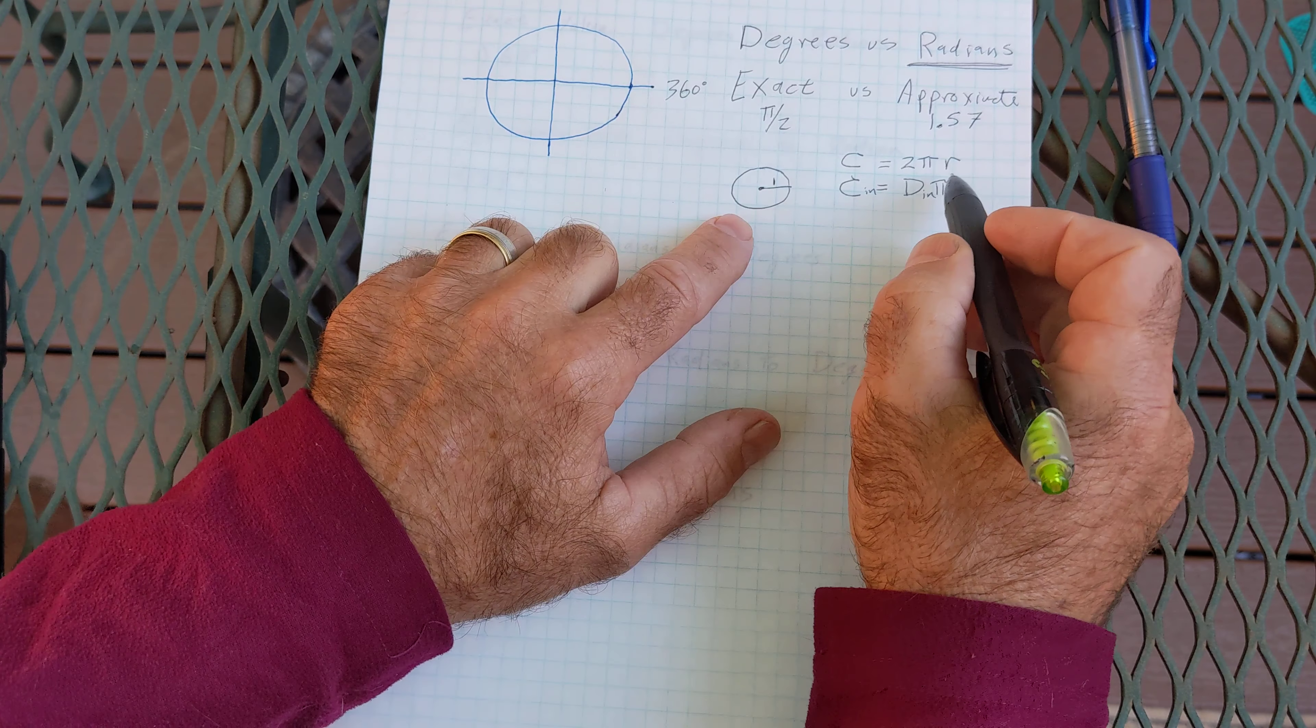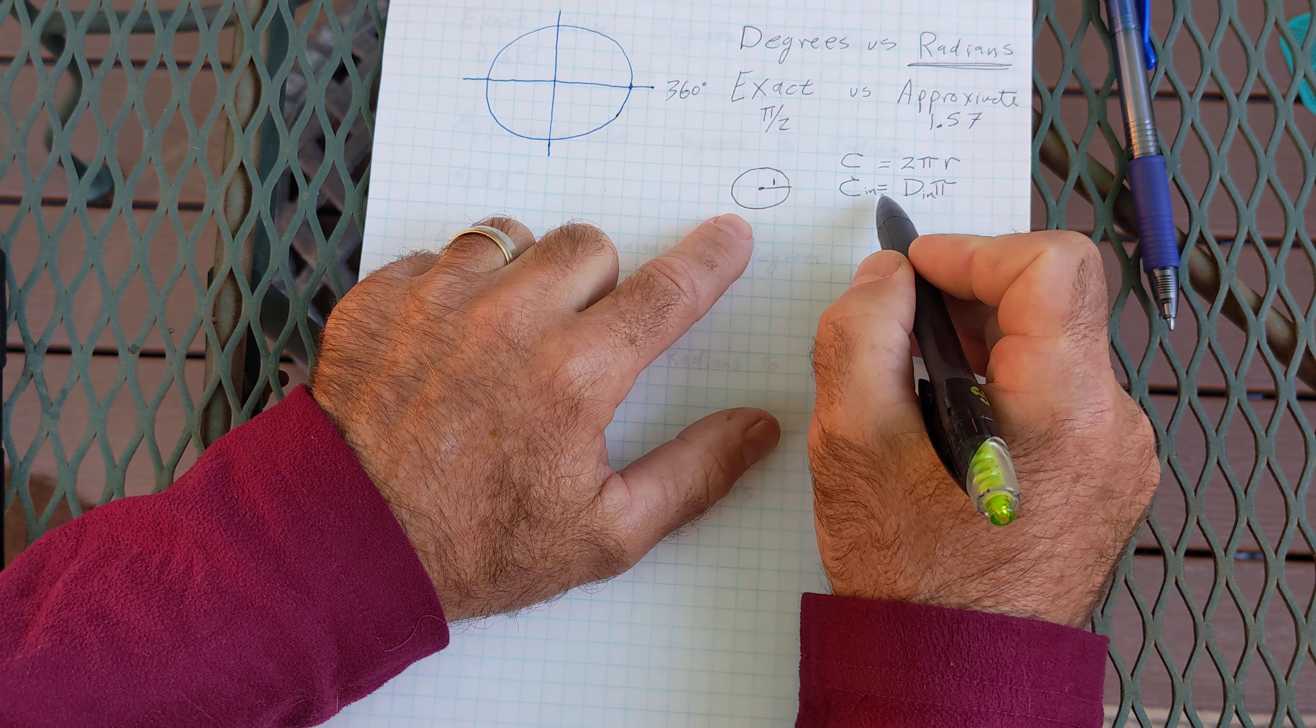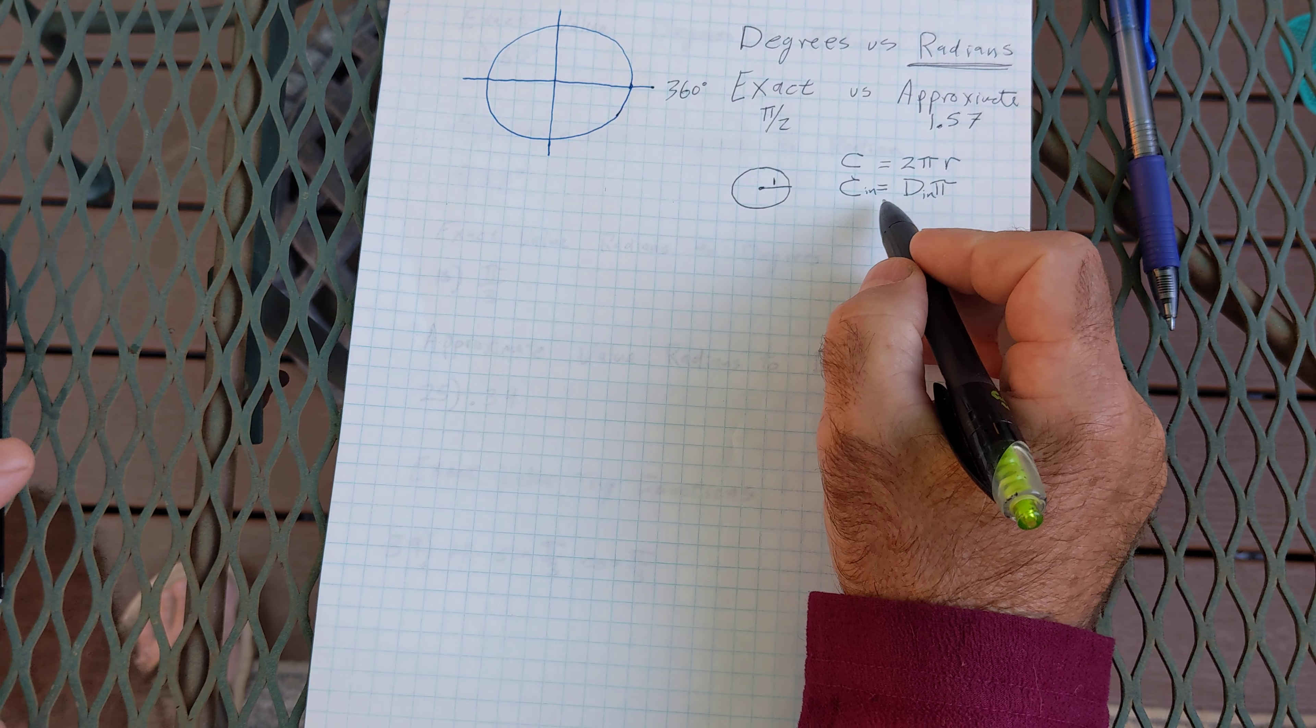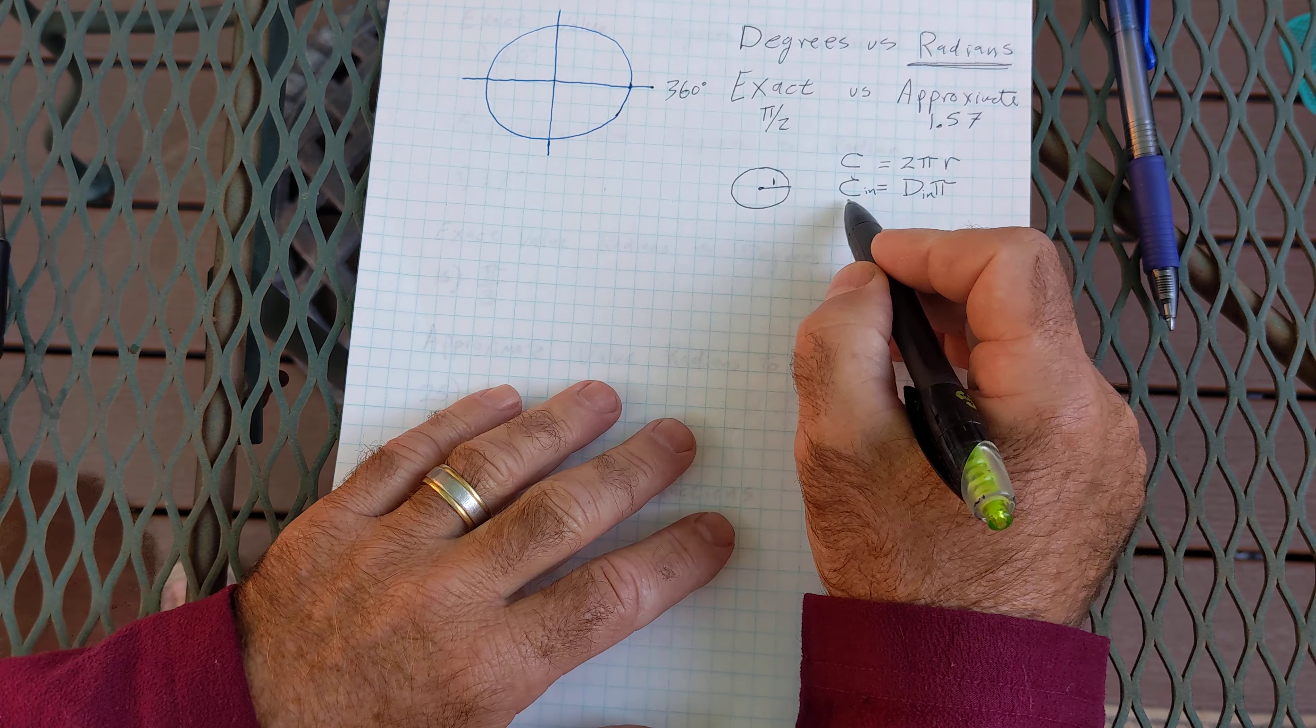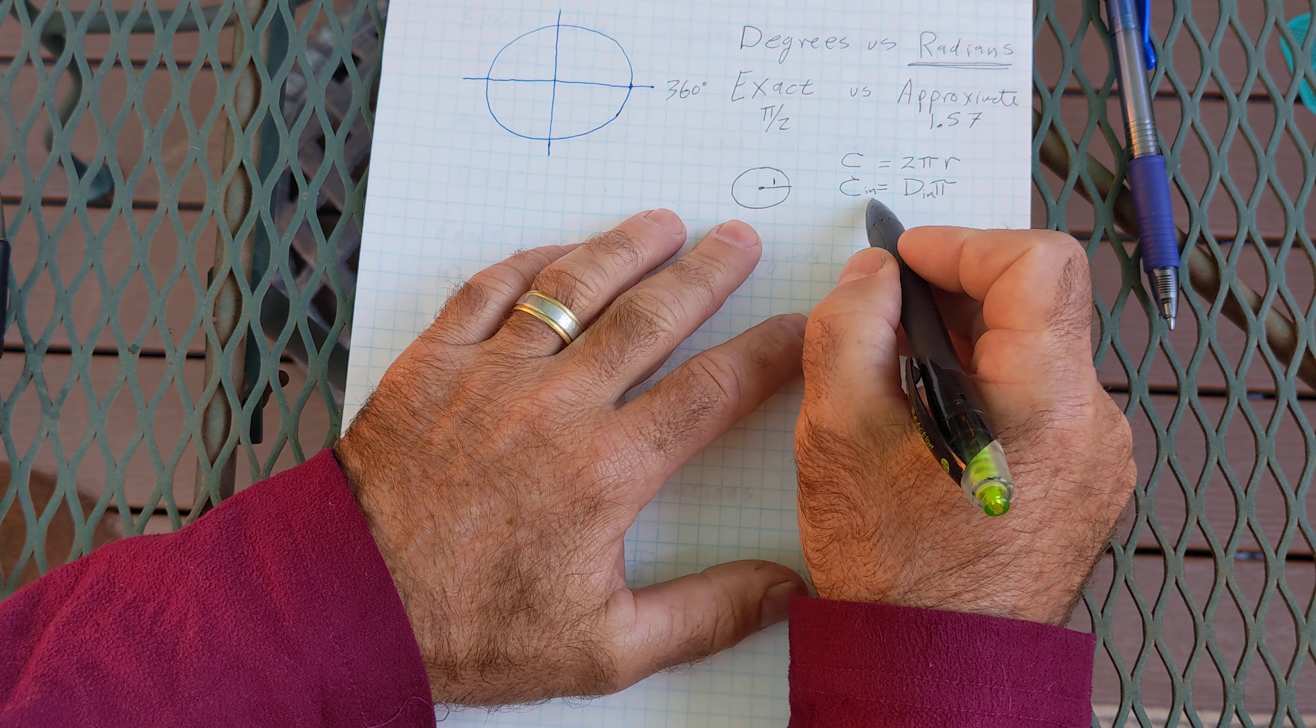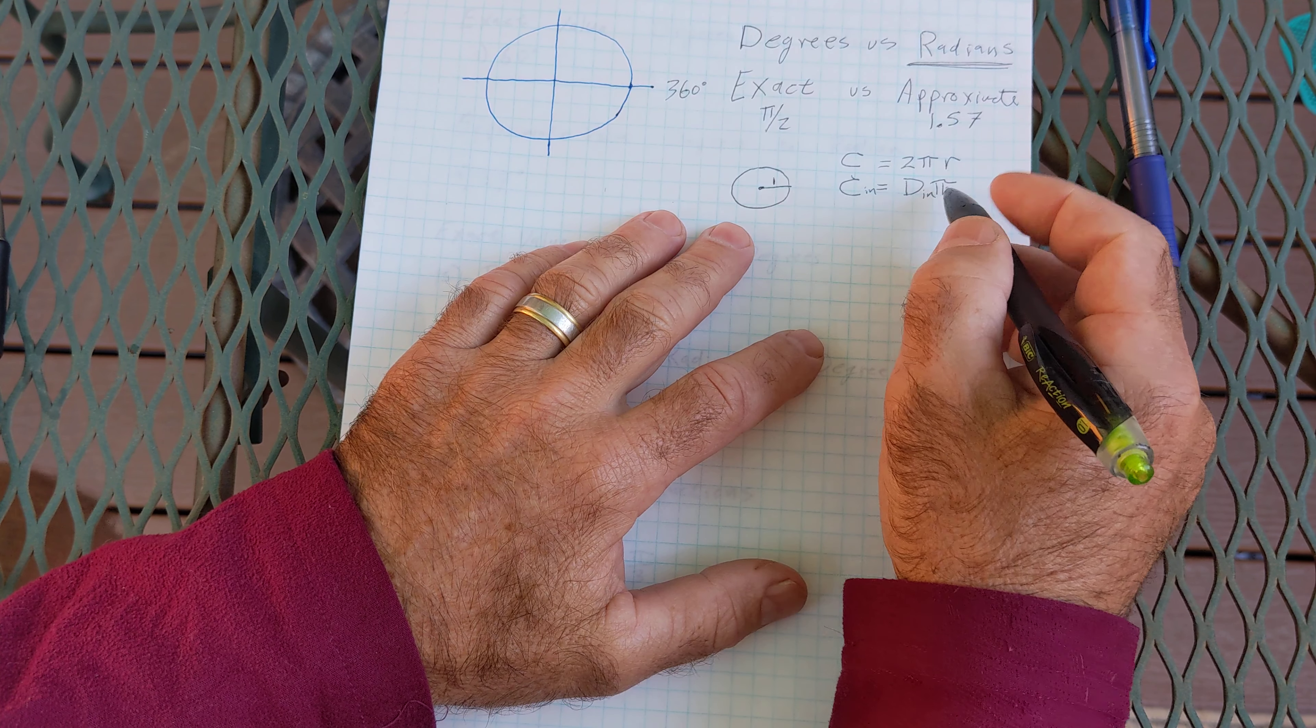Two radiuses is also a diameter so circumference is equal to diameter times pi. This from algebra 1 geometry early on we've been working with this equation a long time.